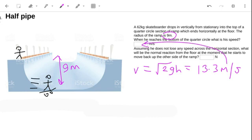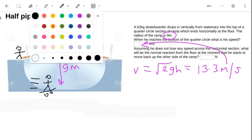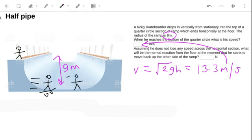For the first one, assuming he does not lose any speed across the horizontal section, what will be the normal reaction at the moment that he starts to move back up to the other side? That moment is when he starts moving again in a circle.